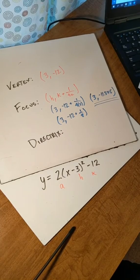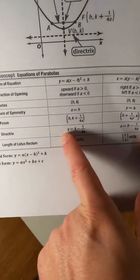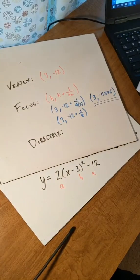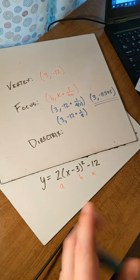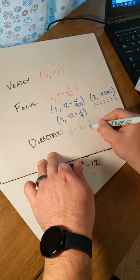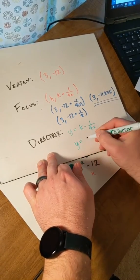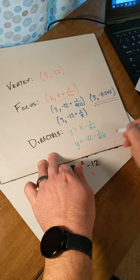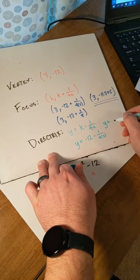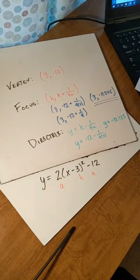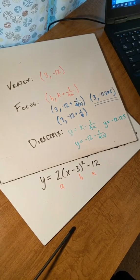And then finally, the directrix. The formula is y equals k minus 1 over 4a. So that's going to be negative 12 minus 1 over 4 times 2. If we plug that in the calculator, the answer is y equals negative 12.125. So there's our first problem in our notes.